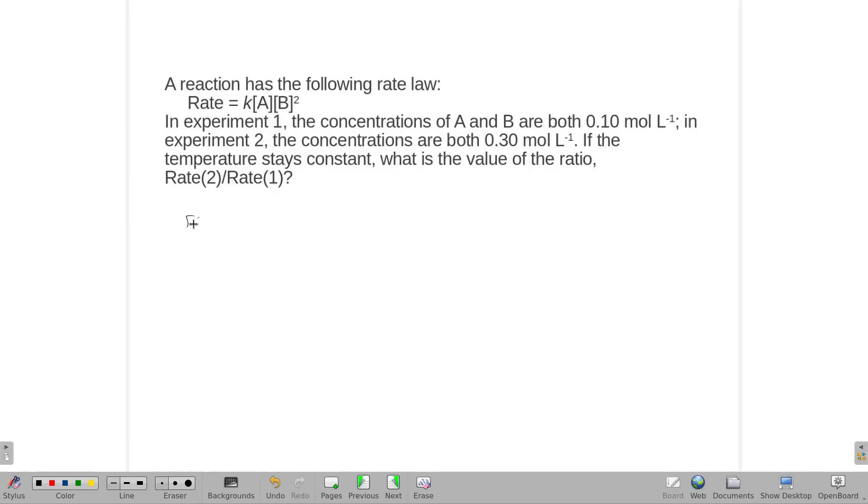I'm just gonna solve for that. Rate two over rate one would be: for rate two, K times the A, which would be 0.3, times B squared, which is 0.3 squared.